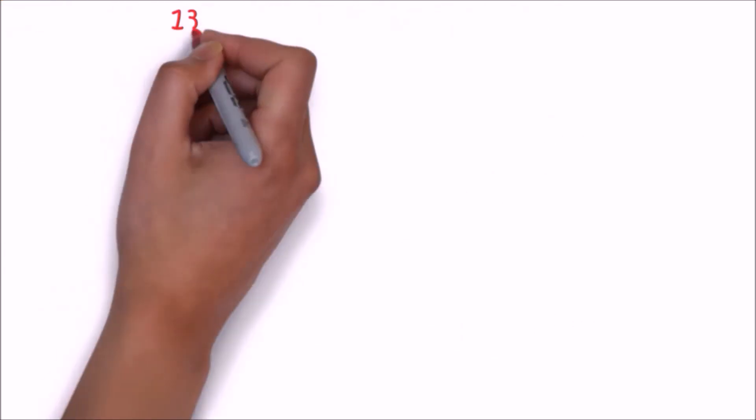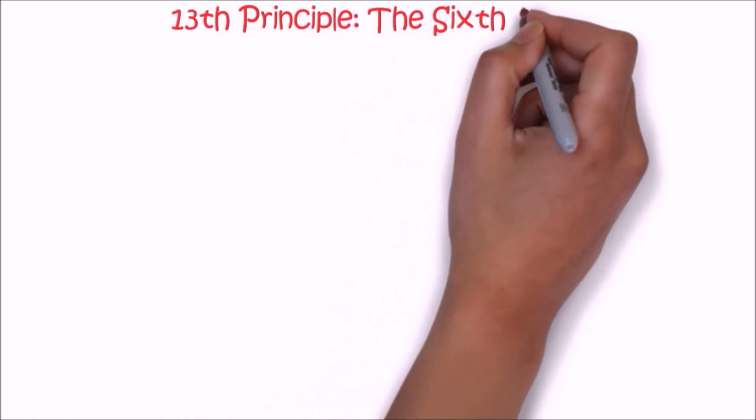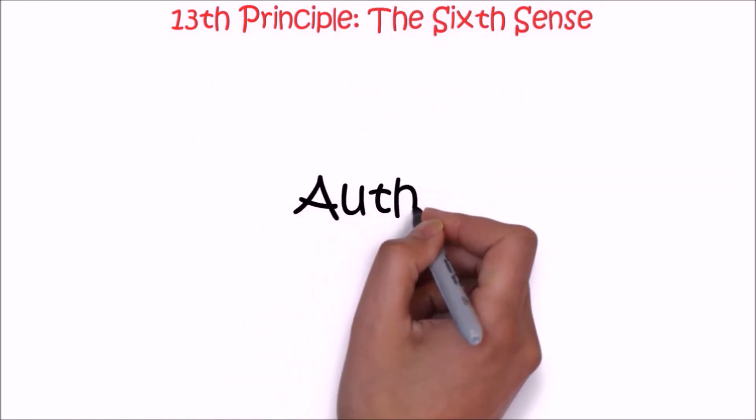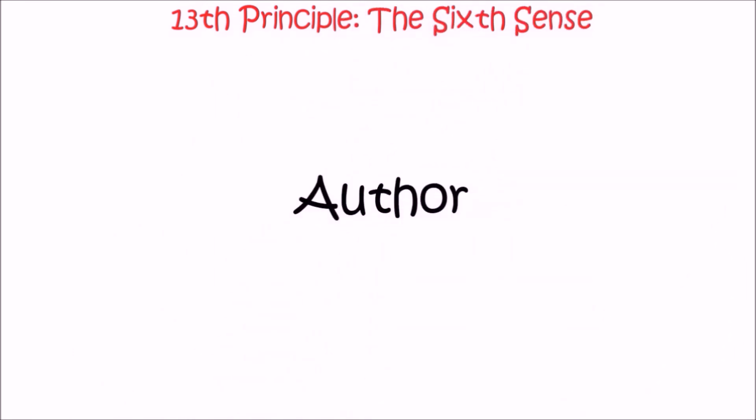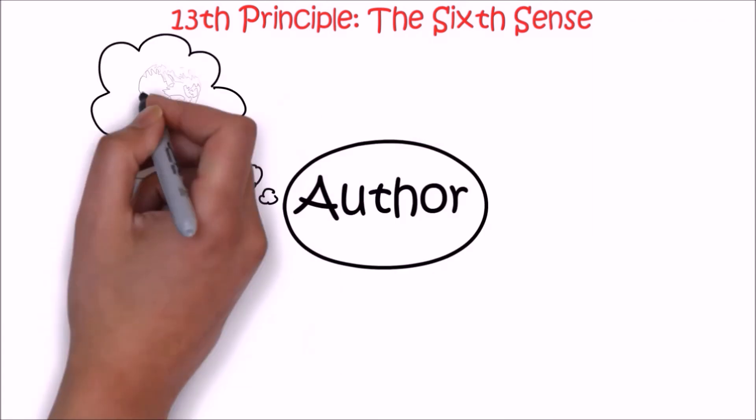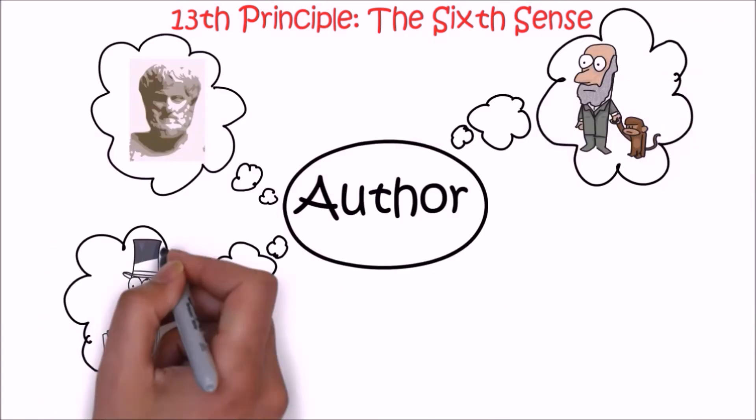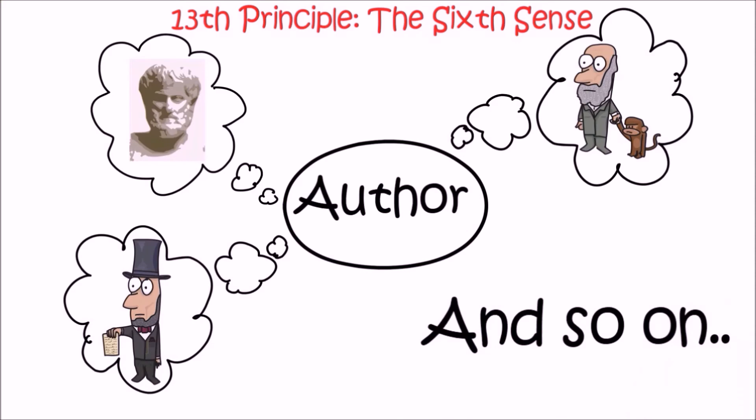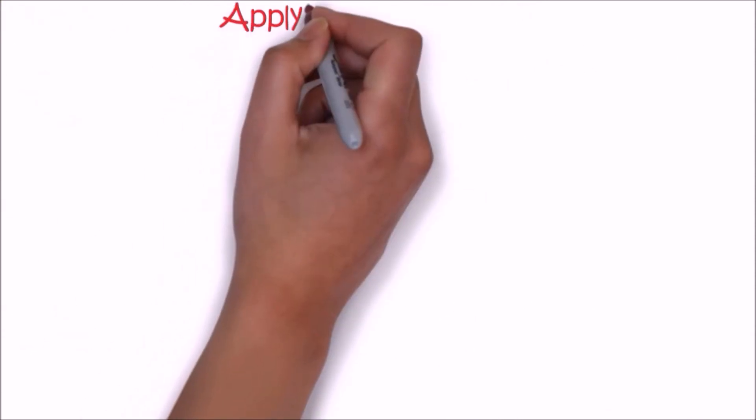The 13th principle is the sixth sense. This chapter is a little controversial. The author talks about how he was able to communicate with great people like Aristotle, Darwin, Emerson, and Lincoln.